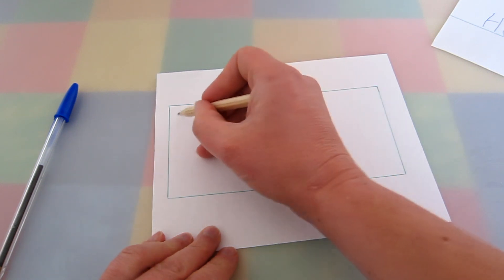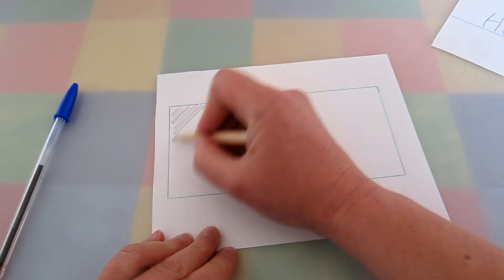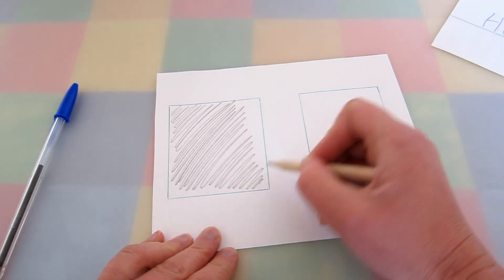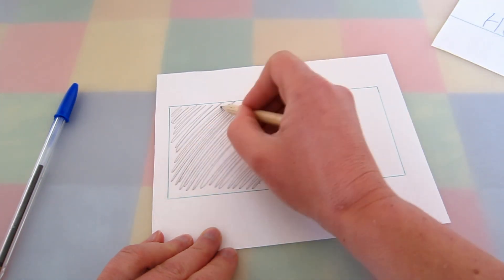If they're right-handed the square will look like this. All the lines are going in this direction.